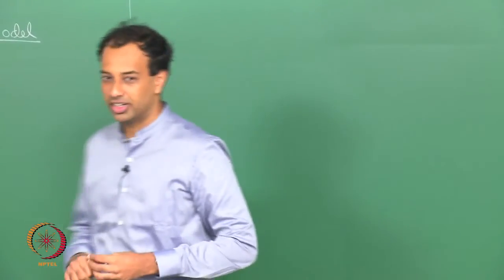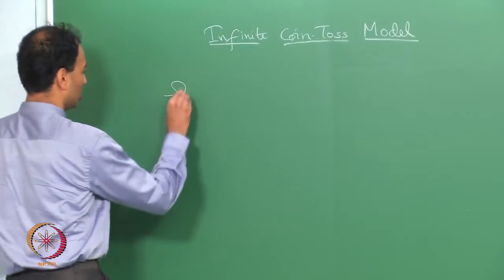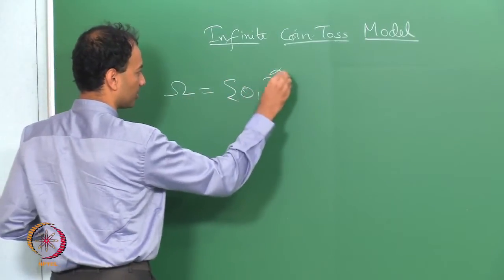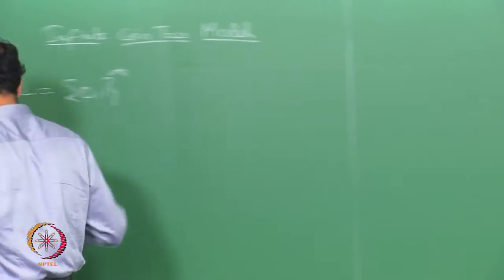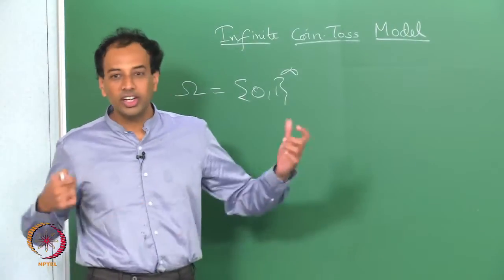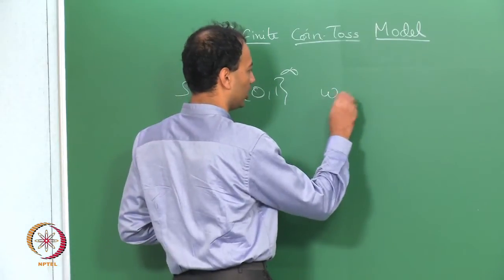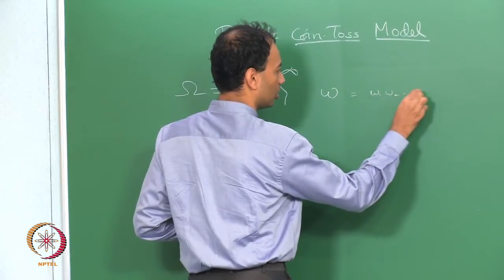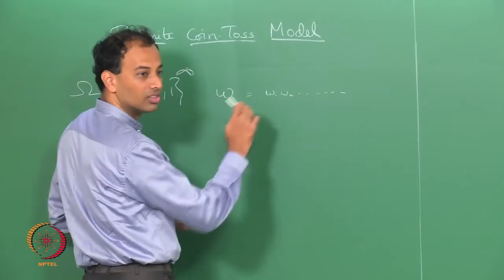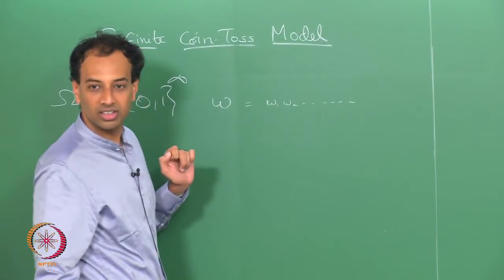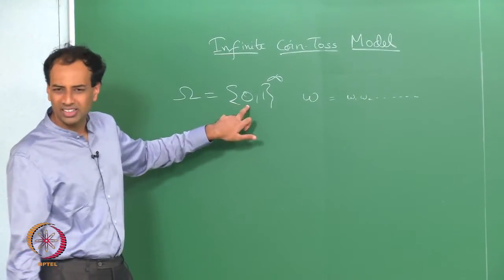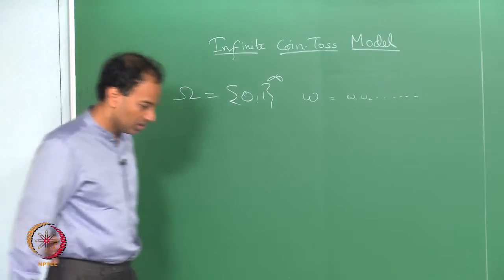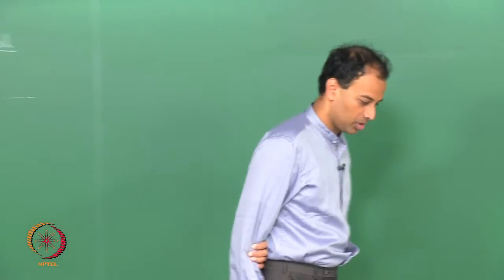Today, we will consider another uncountable sample space called the infinite coin toss model. In this case, the sample space is the uncountable set {0,1}^∞. Each elementary outcome ω is of the form ω₁, ω₂, … — these are bits. So each elementary outcome is an infinite binary string. By Cantor's argument, we know this is an uncountable sample space. Essentially, we are calling heads 0 and tails 1.